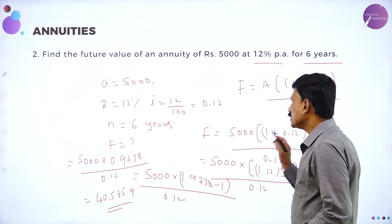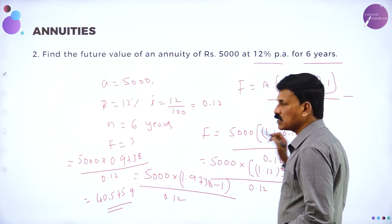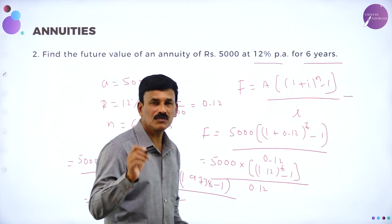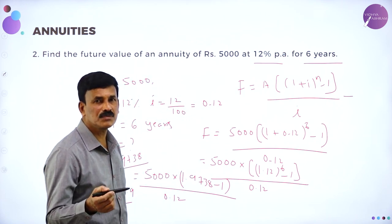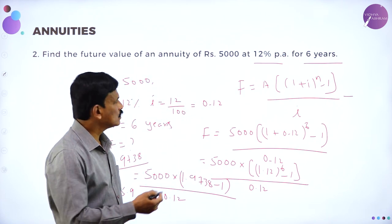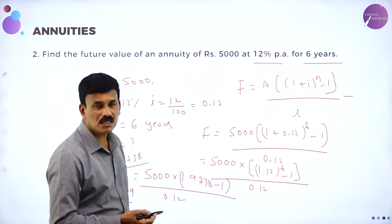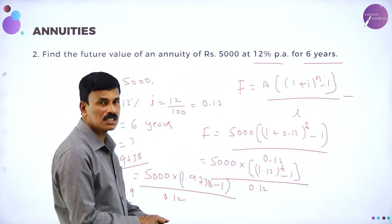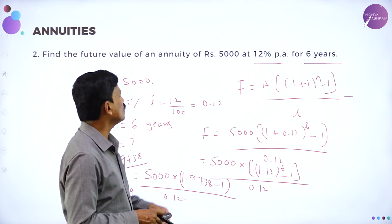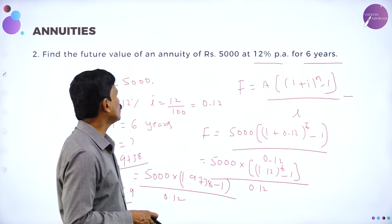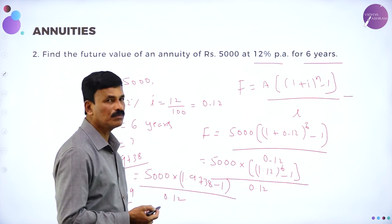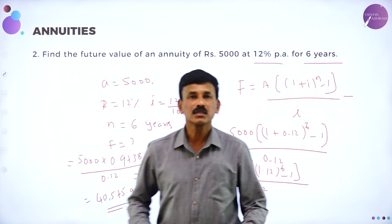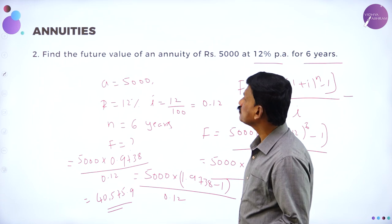Just substitute the values in the formula — that is the key step. By using a calculator, you can easily simplify. The formula is: F equals A into (1 plus I) to the power of N minus 1, divided by I.